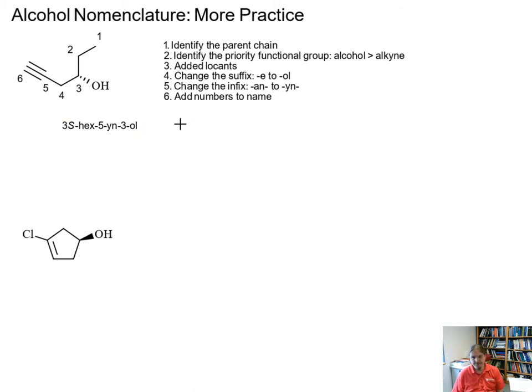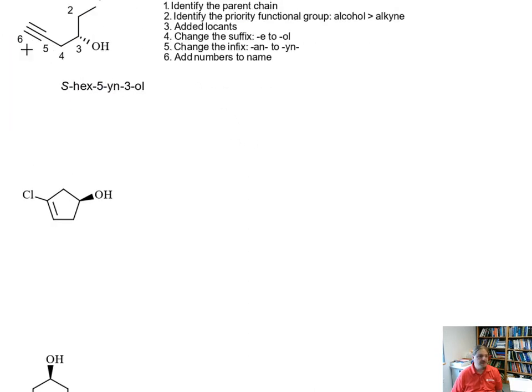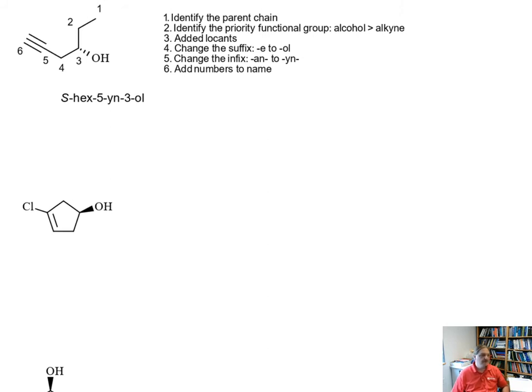If you really felt like you needed to have the three at the S because there are multiple chirality centers you could absolutely do that. Right now there's only one chirality center. I'm actually going to leave that three in front of the name. All right. We just leave the three off. So this is S hex-5-yn-3-ol.